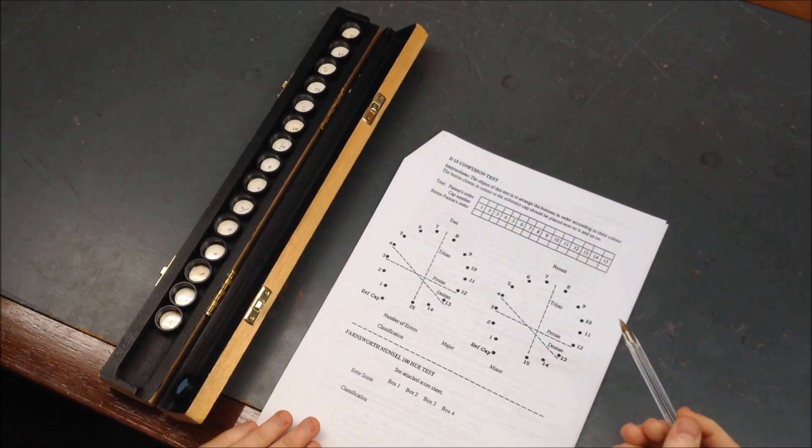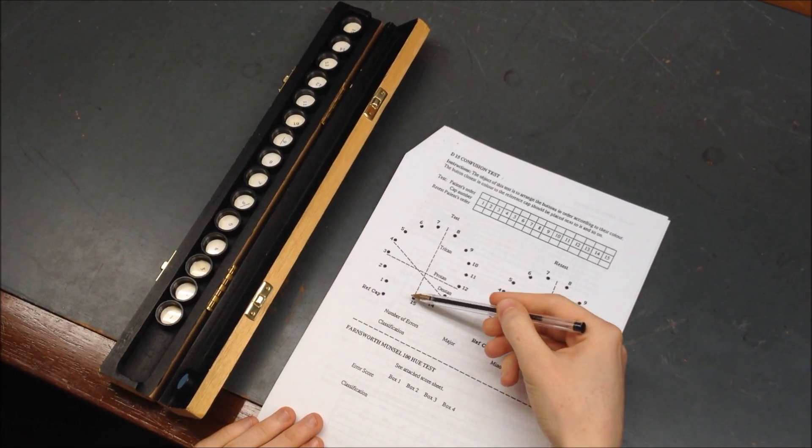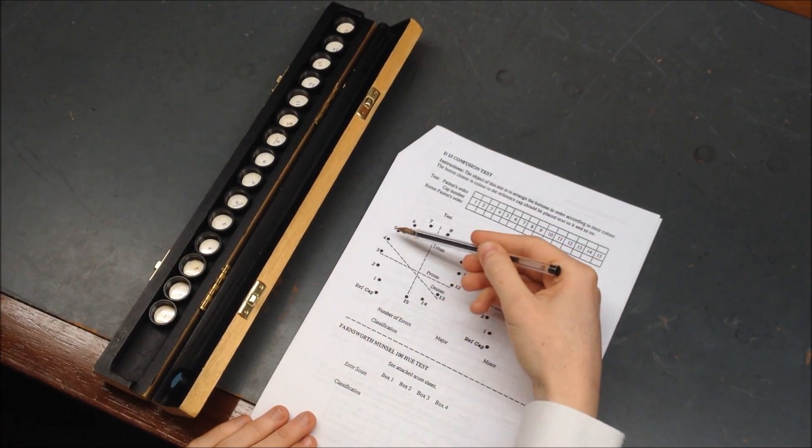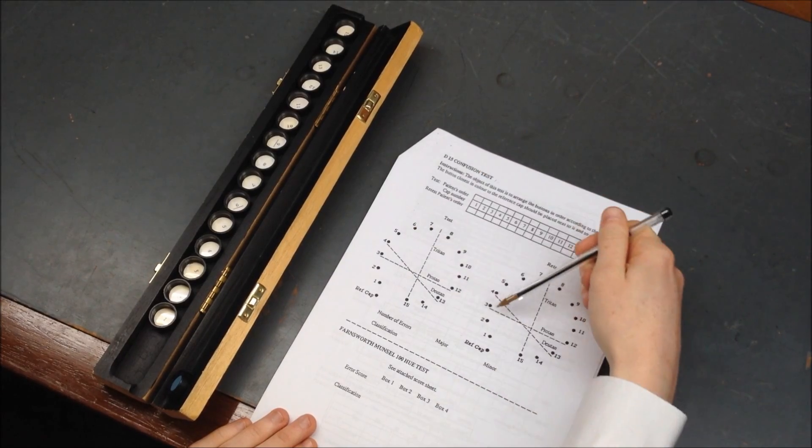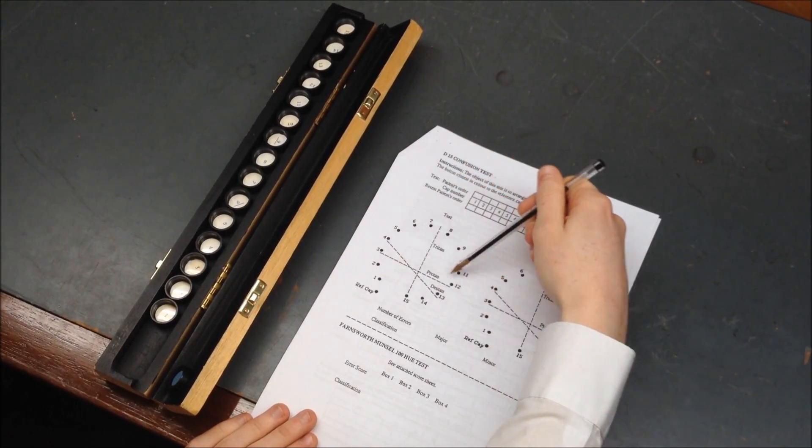In the case of a typical Tritan defect the lines would go up and down like this. A Deutan across the way and a Protan defect horizontally.